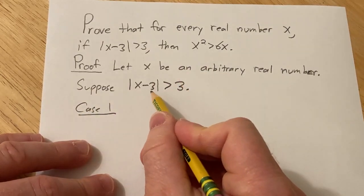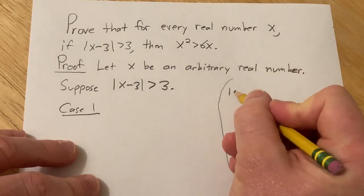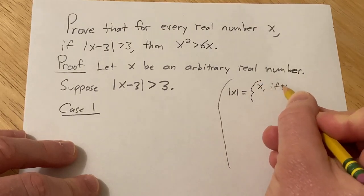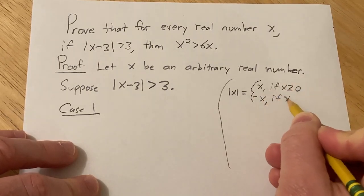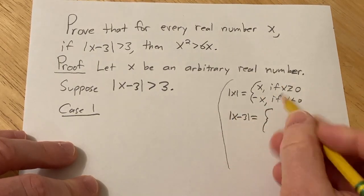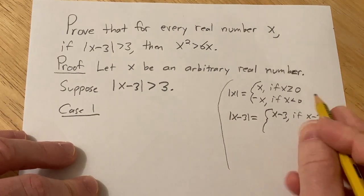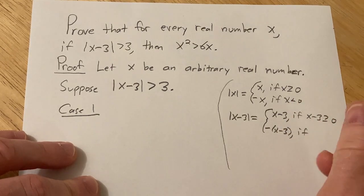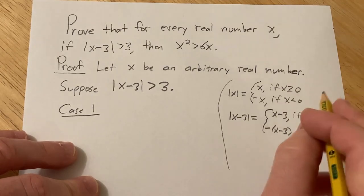So recall that the absolute value of x is a piecewise function. So I'm going to put this here. This is not part of our proof. If you have the absolute value of x, it's equal to x, and that's going to be true if x is greater than or equal to 0. And it's equal to minus x, and that's going to be true if x is less than 0. Likewise, if you have the absolute value of x minus 3, that's going to be x minus 3, and that's going to be true if x minus 3 is greater than or equal to 0. Or it would be minus x minus 3, and that would be true if x minus 3 is less than 0.